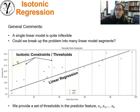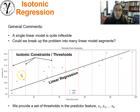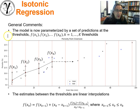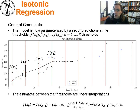What we'll need to do is establish isotonic constraints — just thresholds. We'll pick a set of threshold values, and now our problem becomes: can we estimate a linear model between each one of the thresholds such that we minimize the error with regard to the training data? Our model has become a set of values that we estimate at each one of the isotonic constraints — f(x1), f(x2), f(x3), all the way up to our final threshold. Those estimates are how we now parametrize the model, and we simply apply linear interpolation between these points.